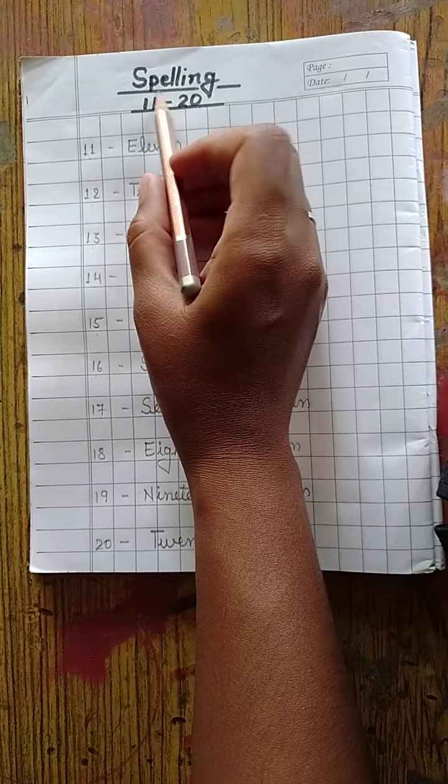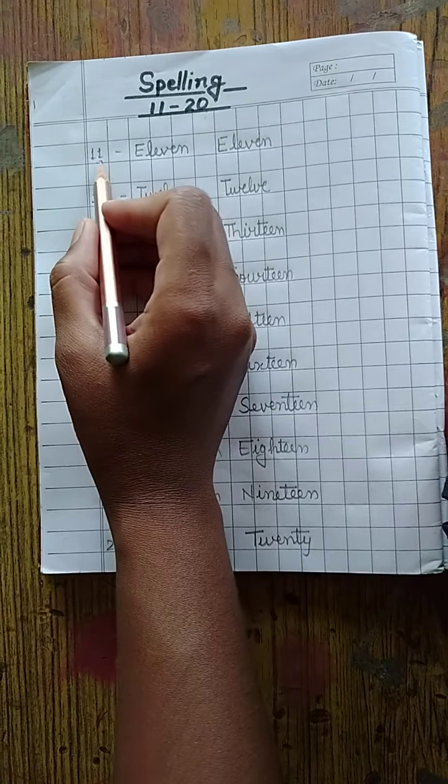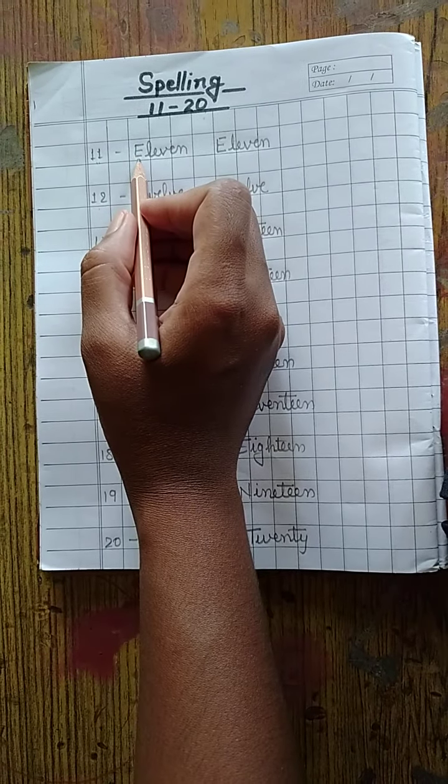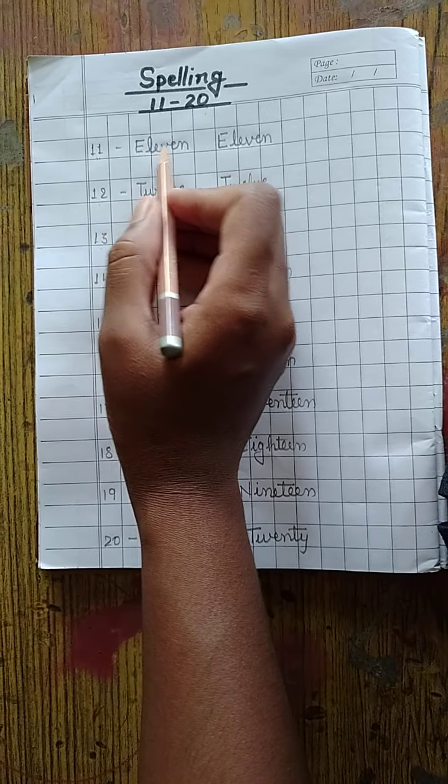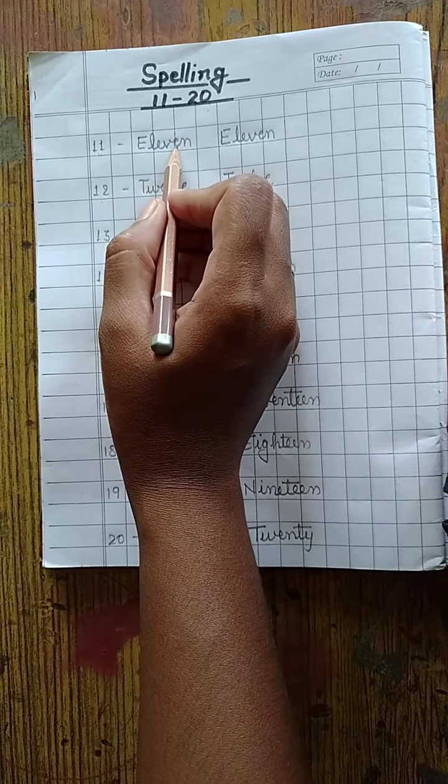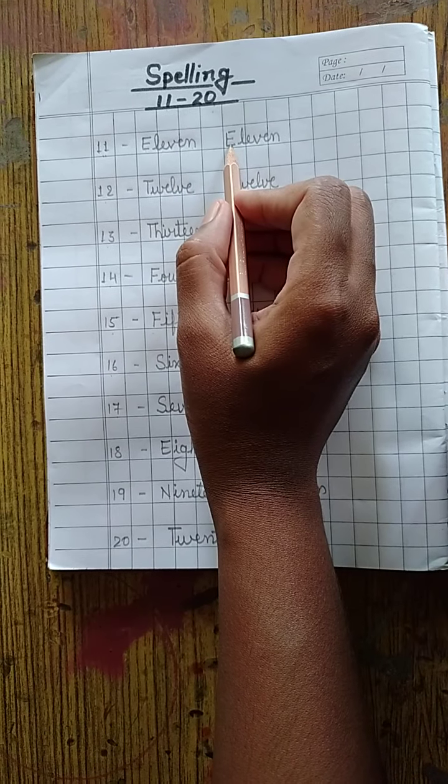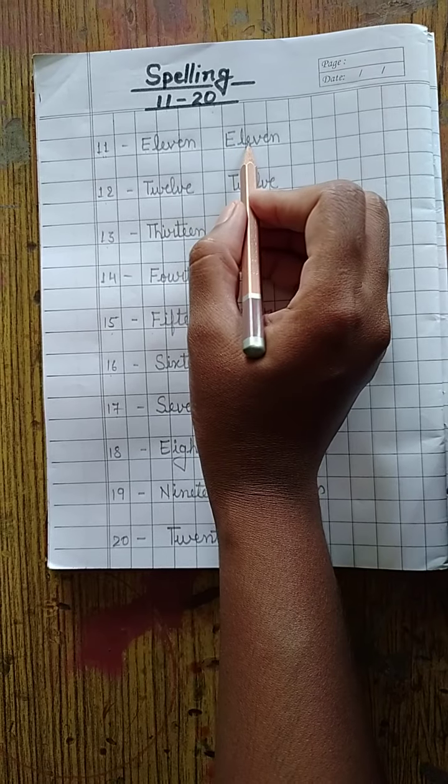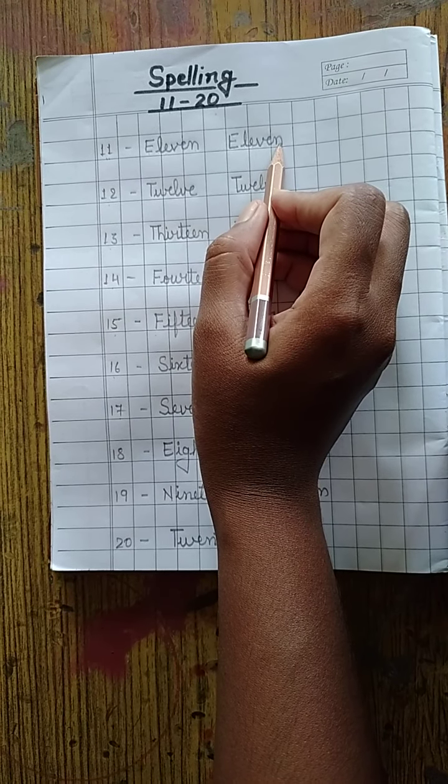Today we are going to start spelling 11 to 20. 11. Everyone repeat after me. E L E V E N. 11. Once again. E L E V E N. 11.